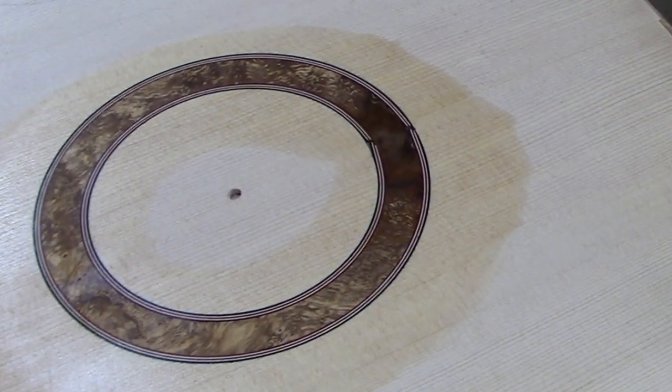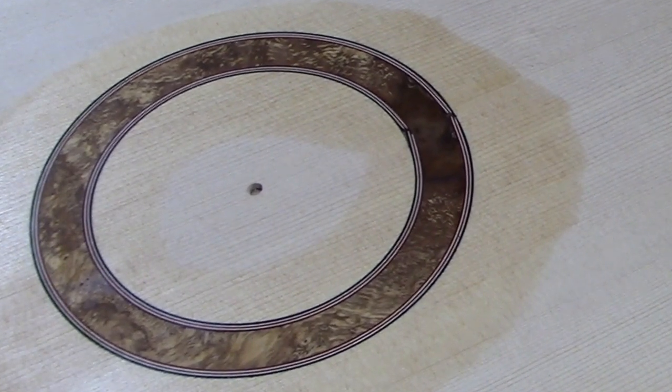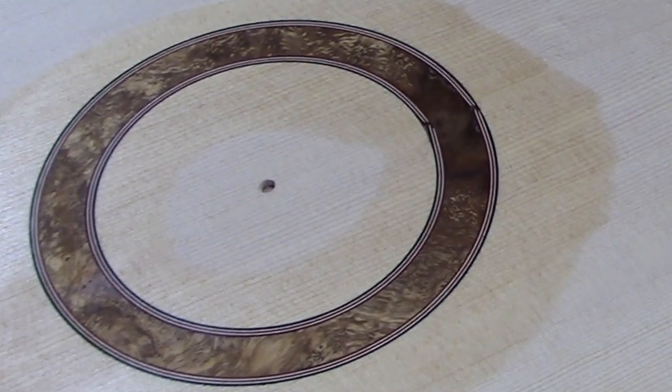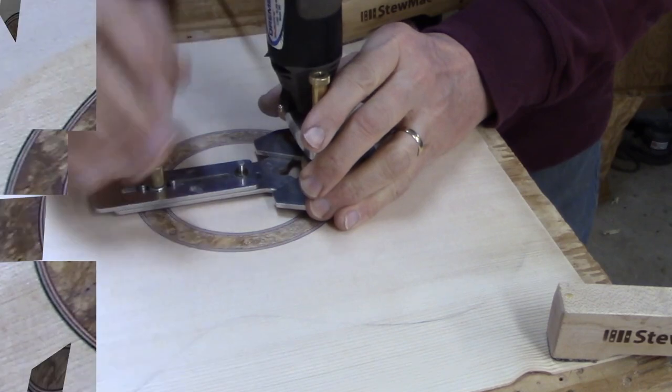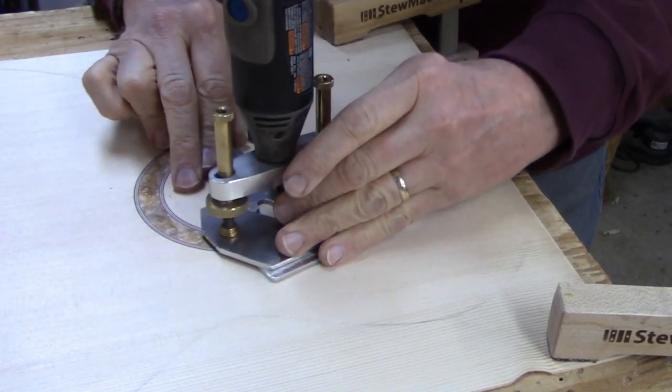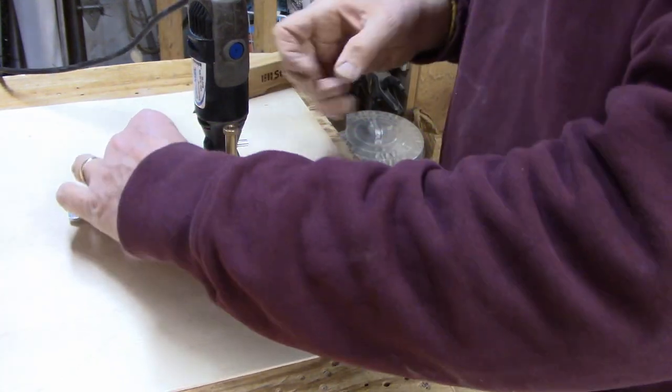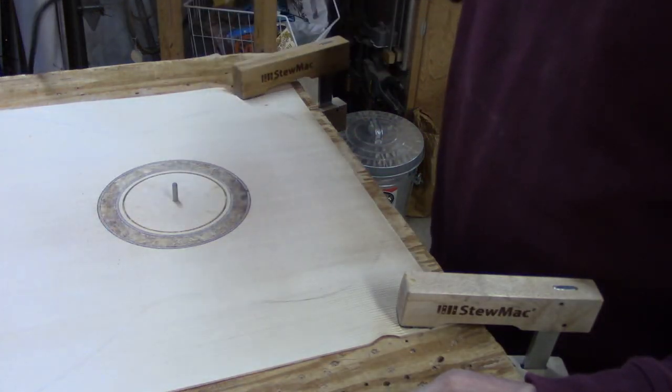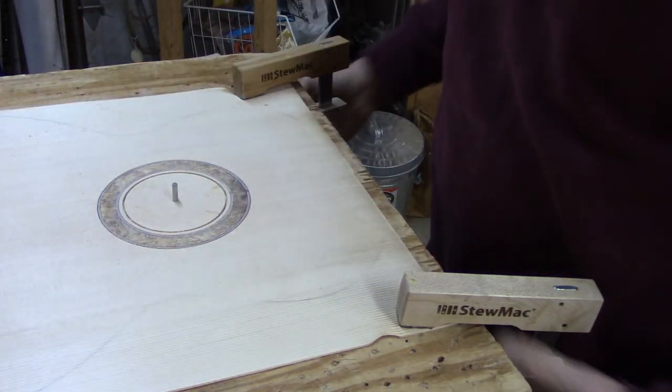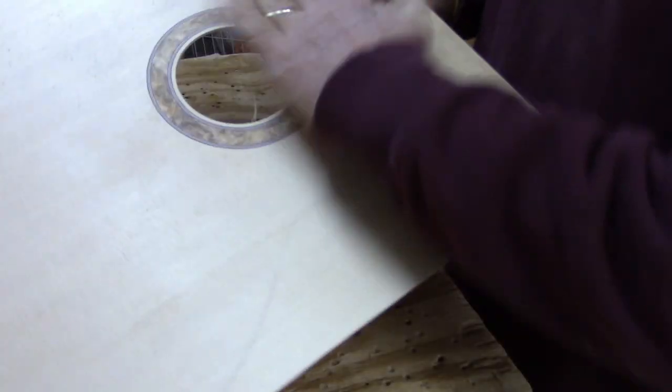Okay, so the last thing to do now is just cut out the hole for the soundhole, and I'm going to use that same router setup that I used for making these rings. Okay, there we go. Just sand up the fuzz and it'll be all set.